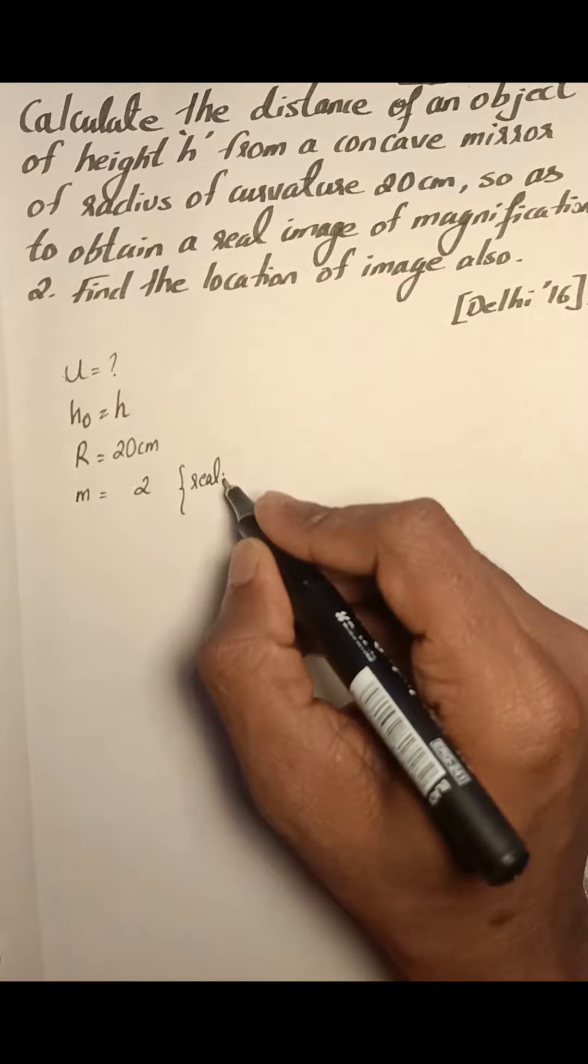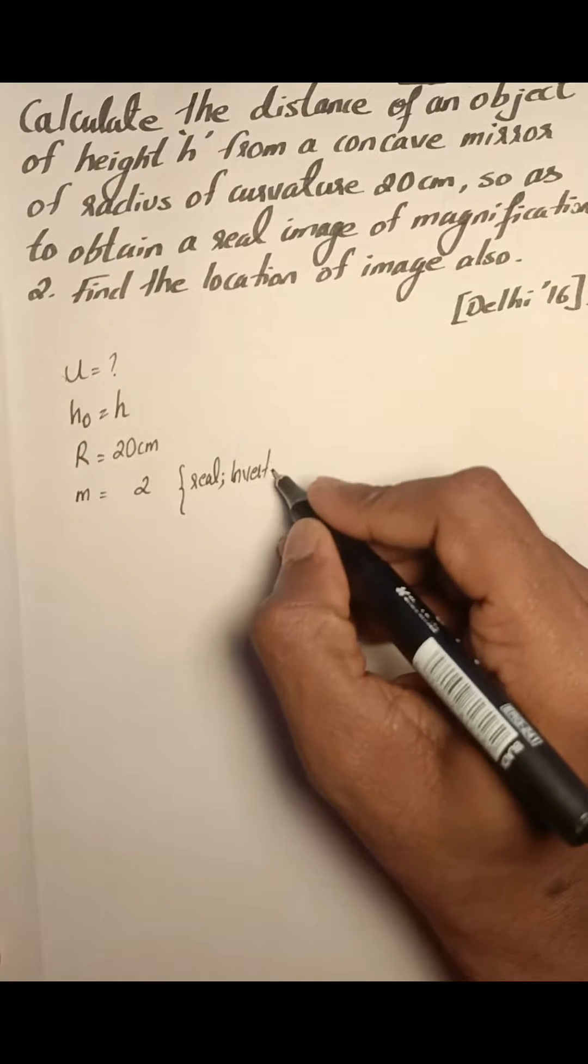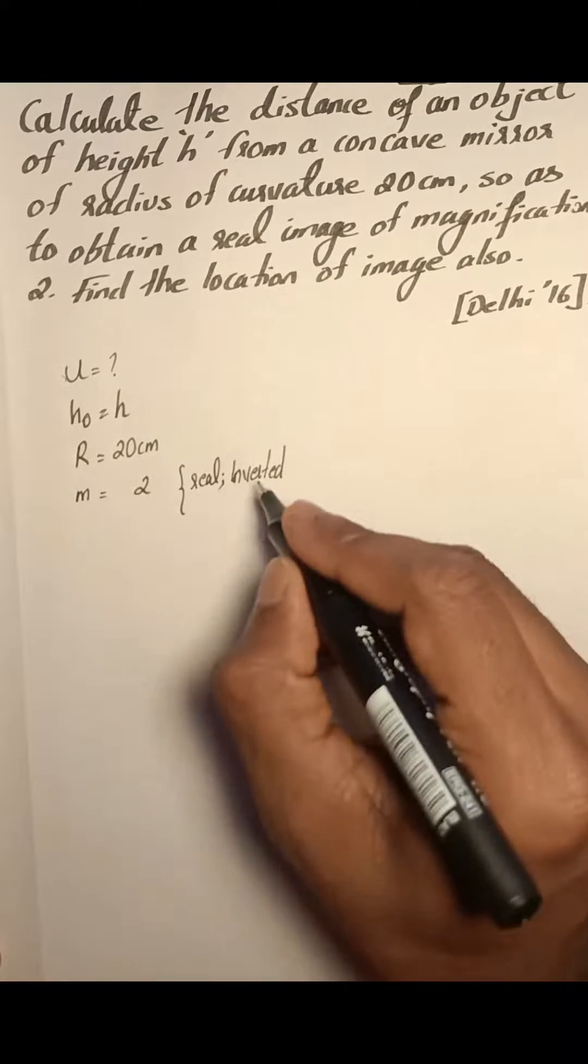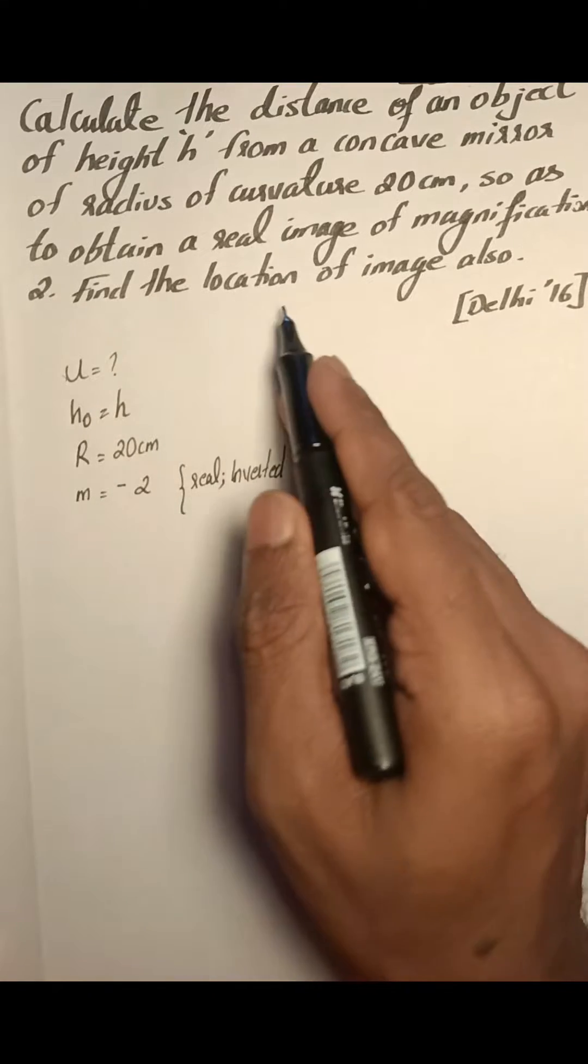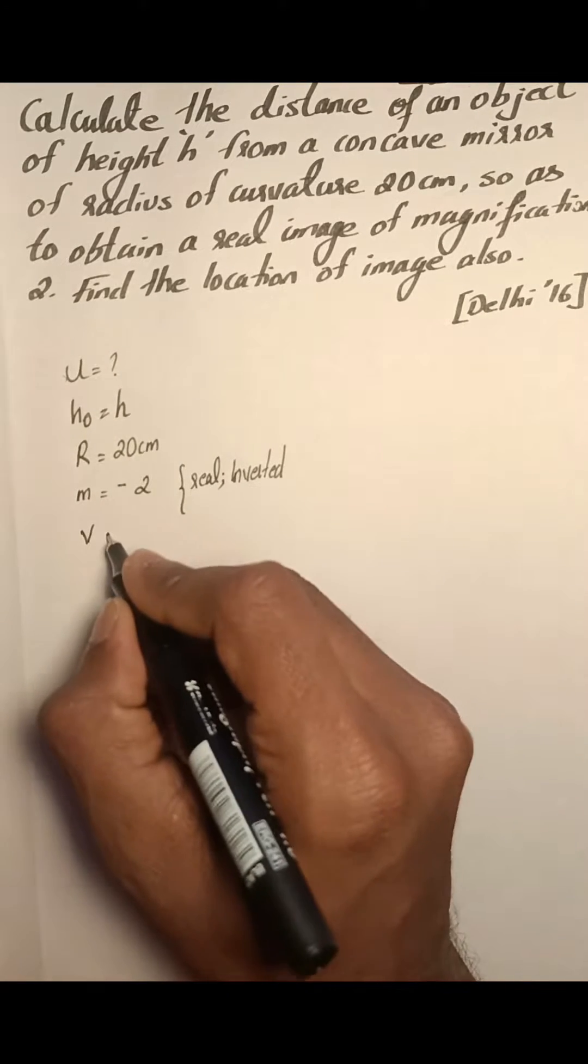If the image is real, then it also means that the image is inverted. So for an inverted image, the magnification will be minus 2. We also need to find out the location of the image, that is the image distance v.